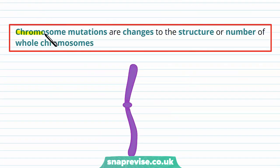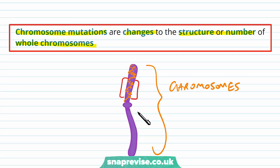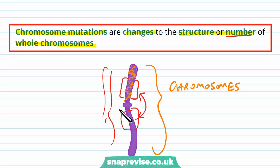A chromosome mutation is a change to the structure or the number of whole chromosomes. In most organisms, DNA gets packaged into chromosomes — large areas in the nucleus where lots of DNA is wrapped up into tight spirals and coils to save space. A chromosome mutation can be a change to the structure, so we could cut some of it out or swap a whole part for another. Or it can be a change in number, so we might accidentally have too many chromosomes or lose one of them.